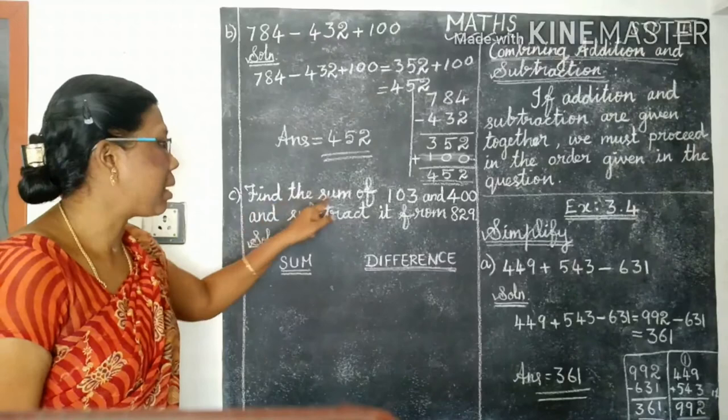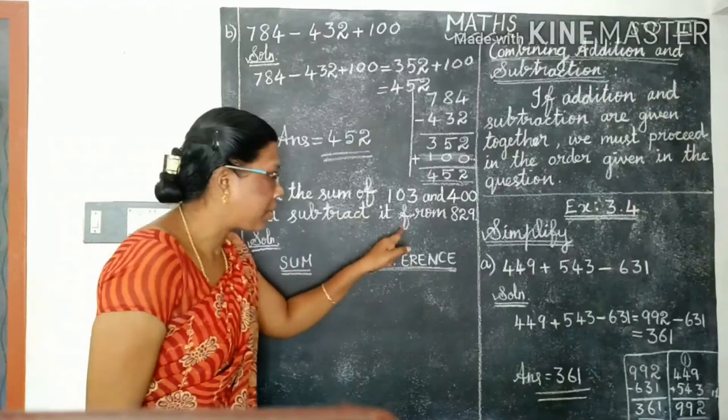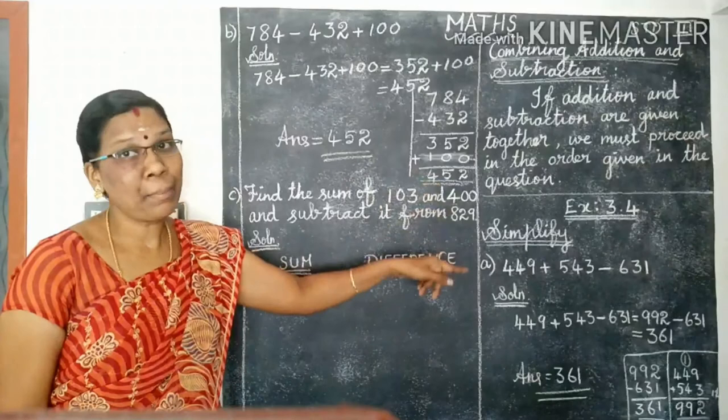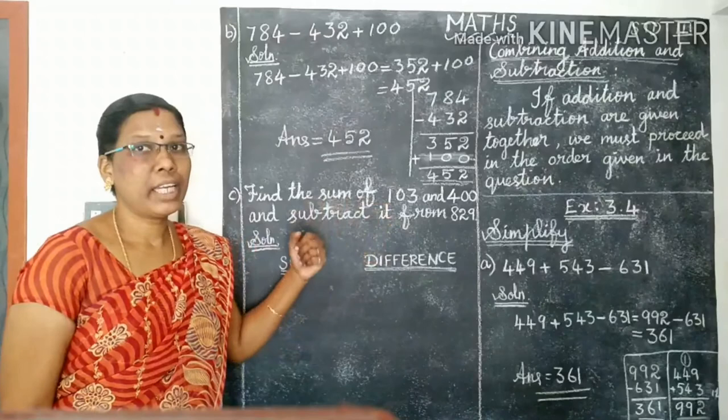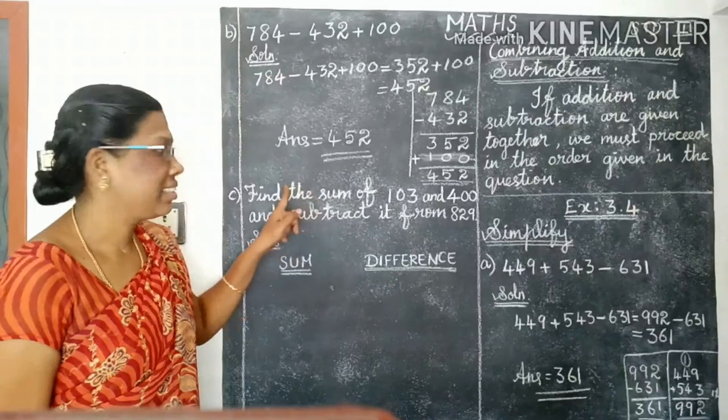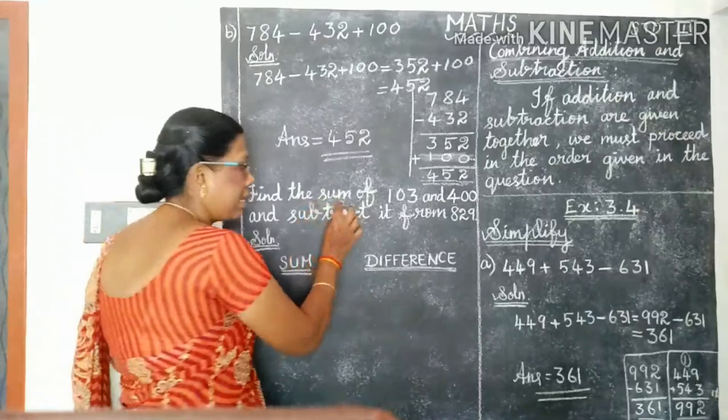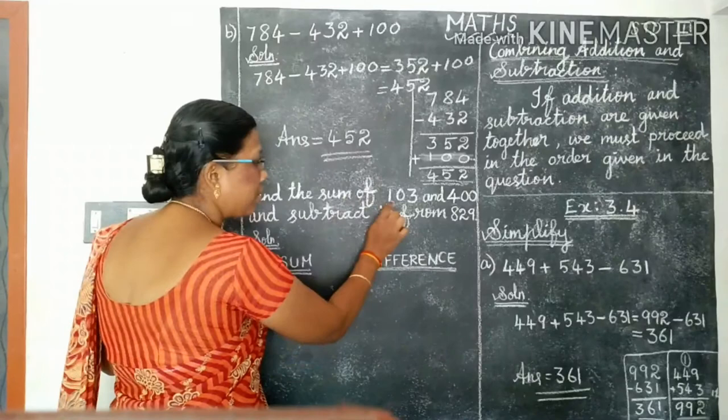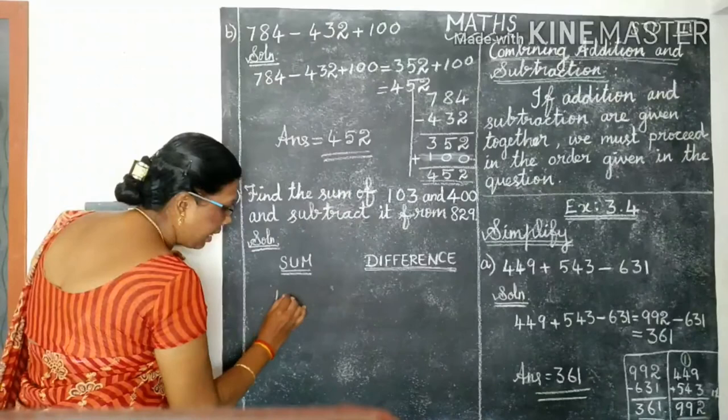Listen to the next question. Find the sum of 103 and 400 and subtract it from 820. There, previous these 2 problems, the simple given. Here, the given problem like a statement. We need to find out add or subtract. See here, find the sum. This sum means what? We need to add. See here, subtract, so subtraction. Listen carefully. Sum and difference, both we need to find out.